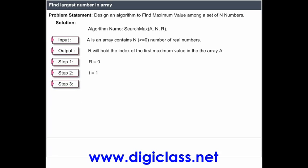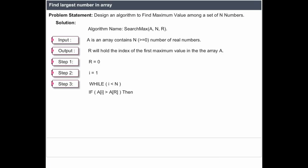Step 3: While i < N: If A[i] > A[R], then R = i. End if. i = i + 1. End while.